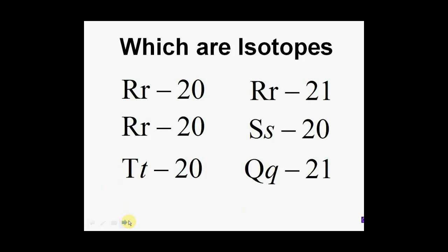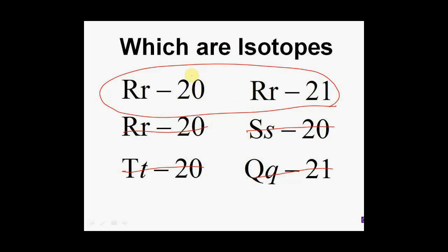On this slide, identify which atoms are isotopes — same number of protons, different number of neutrons. In order to have the same number of protons, I must have the same element. Some elements appear only once here, so I can eliminate those right away. I'm looking for the fictitious element R. The two identical-looking Rs have the same mass number, so they're not isotopes — same neutrons too. The answer is the pair with mass numbers 20 and 21 for element R. Since it's the same element, the same number of protons, and different mass numbers mean a different number of neutrons.